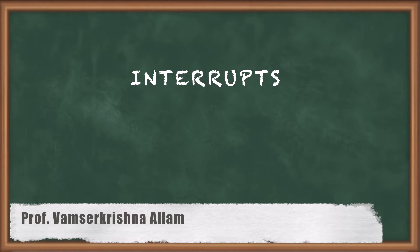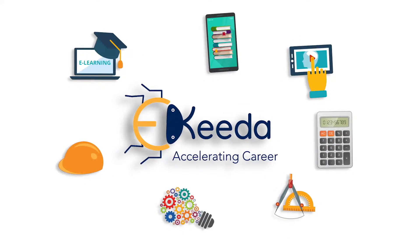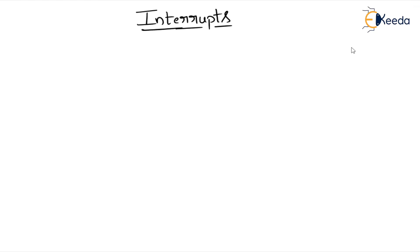Today we will discuss about interrupts. In the last class we discussed about assembler directives and different types of instructions. Now we will go in detail about interrupts — this comes under chapter 3. So what is an interrupt?